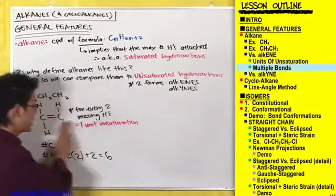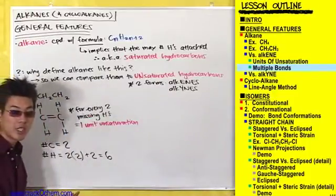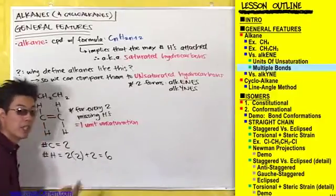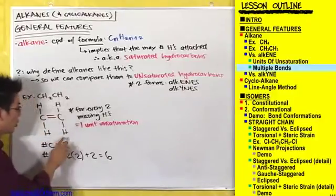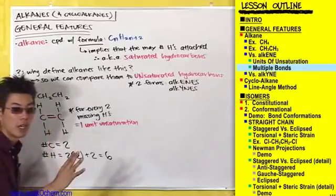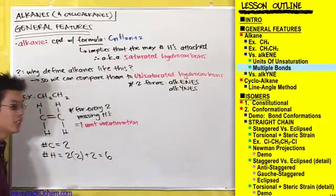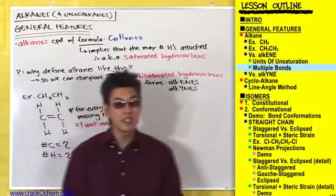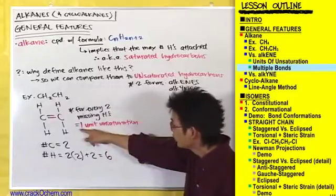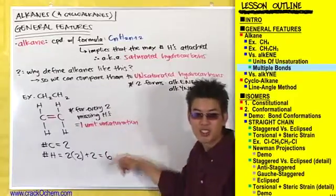In order for this compound to be considered saturated, it should have 6 hydrogens, but it only has 1, 2, 3, 4 hydrogens. That means it's missing 2 hydrogens, and if you're missing 2 hydrogens, that's equal to 1 unit of unsaturation.